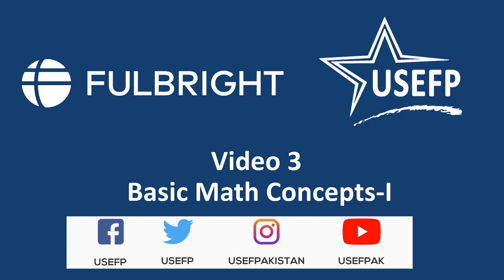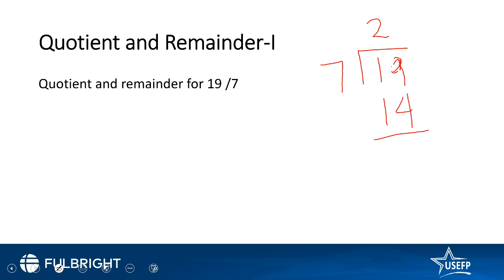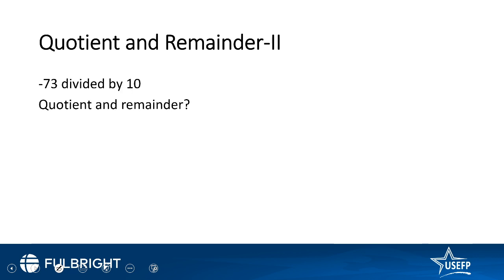So, quotient and remainder: what is the quotient and the remainder if 19 is divided by 7? Pause this video and solve it. So, 19 divided by 7 — the quotient is 2 and the remainder is 5. I hope all of you got it right. 7 times 2 is 14, and 5 is the remainder.